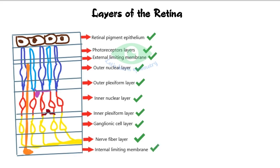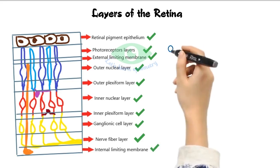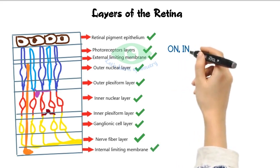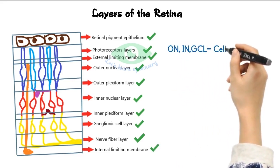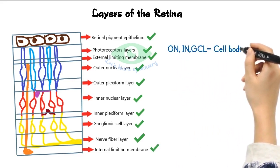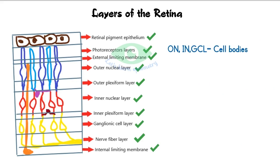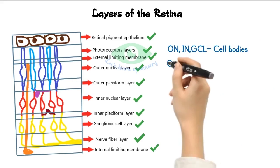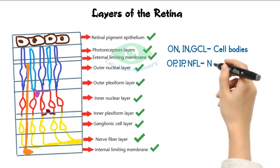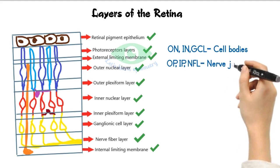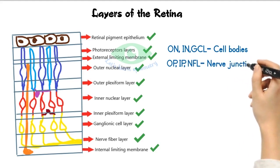To summarize key associations: the outer nuclear layer, inner nuclear layer, and ganglion cell layer contain the cell nuclei. The outer plexiform layer, inner plexiform layer, and nerve fiber layer contain nerve fibers, axons, and dendrites.